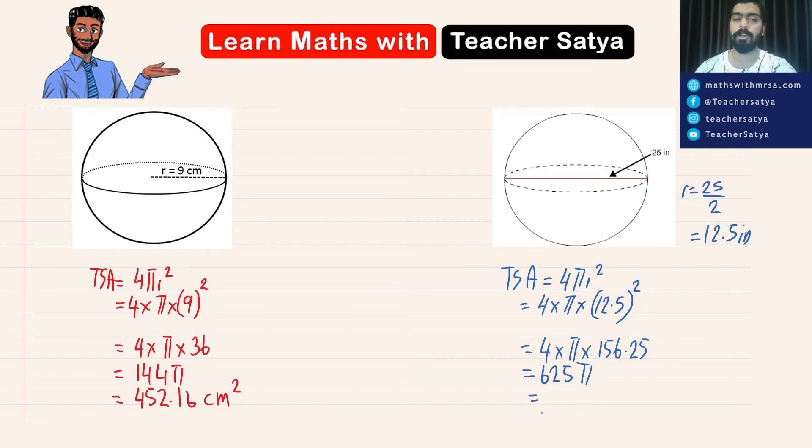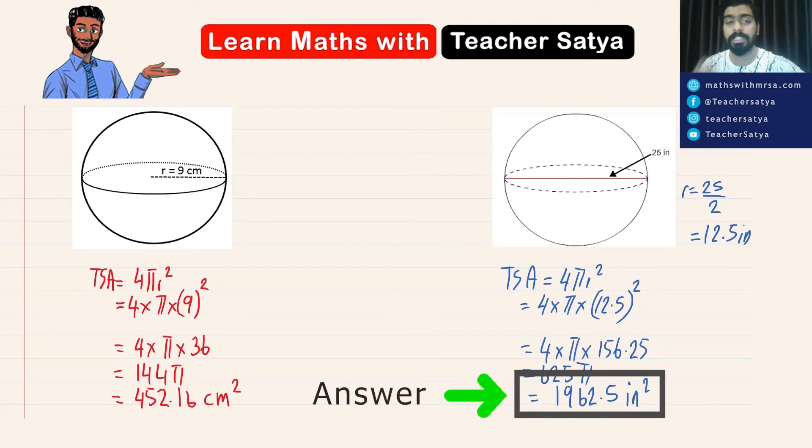Now if we take the value of π as 3.14, we would have 1962.5 inch squared. So the answer would be approximately 1962.5 inch squared. This is how we would find the total surface area of a sphere.